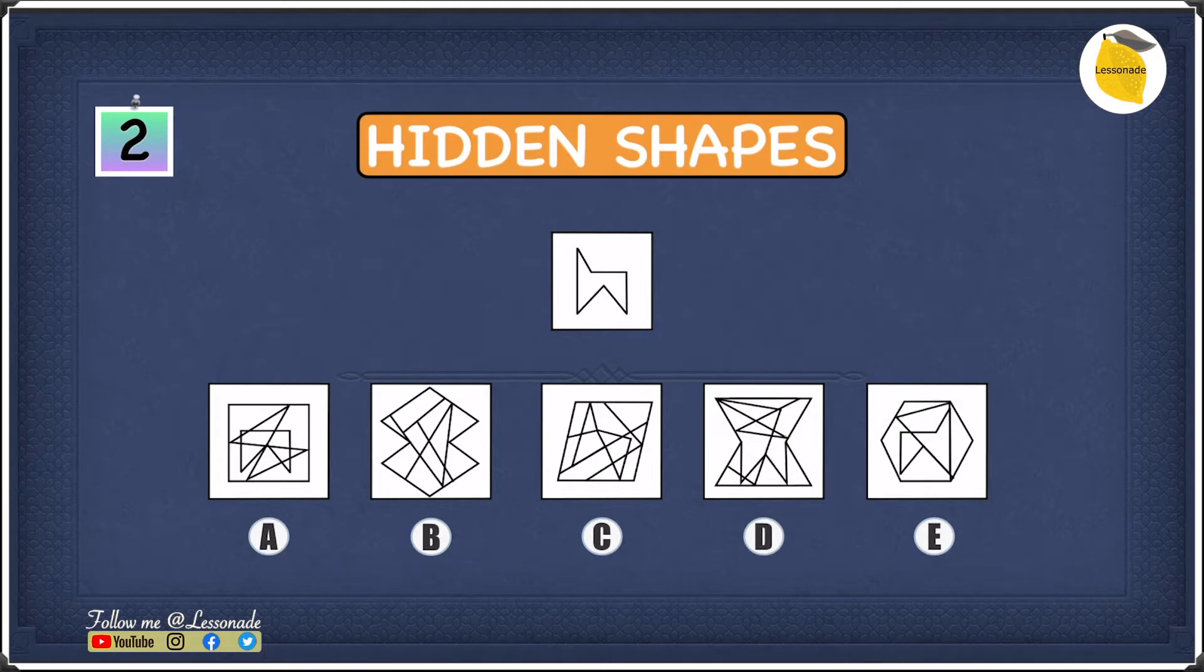Now let's have a look at this example. In this example we have a shape and this shape has been hidden in one of the options below. We need to find which one of these options has the hidden shape. Also, this shape can be rotated when it is hidden but it cannot be reflected. So if we do find an option in which this shape has been reflected, then we cross the option off.